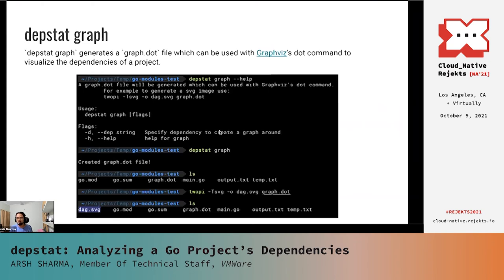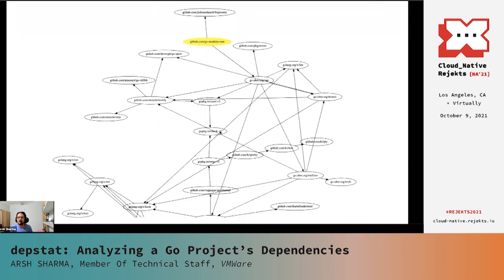Going over to the next subcommand Depstat provides us — it is the graph subcommand. This generates a graph.dot file which can be used with Graphviz to visualize the dependencies of a project. Graphviz, for those of you who are not familiar, is another command line tool which provides a way of representing structural information as diagrams of graphs. You can run the depstat graph command and it will inform you that it has created a graph.dot file. Running the Graphviz command to generate the graph, you would see that a dag.svg file appears in your project directory. If you open this file, you should see a graph which would look something like this. Highlighted in yellow will be your main project module, and from that you can visualize the direct dependencies, and from those you will see the transitive dependencies originating further.